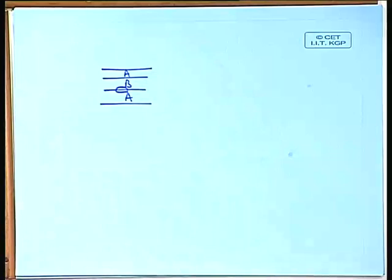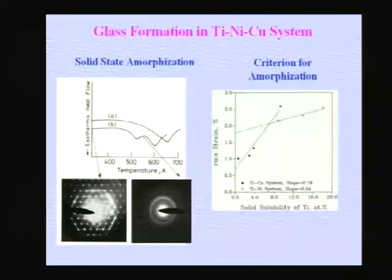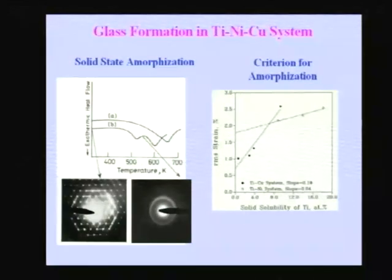If the crystal size has become fine enough, you can take the multilayered structure formed by ball milling and heat it. At low temperatures, you provide sufficient thermal activation energy for atoms to diffuse through the layers, and an amorphous phase can nucleate at the interface - similar to how it forms in multilayered structures. In a differential scanning calorimeter (DSC) of titanium-nickel-copper compositions, two cases are shown: composition A is already amorphous in the as-milled condition, giving one exothermic peak on heating.